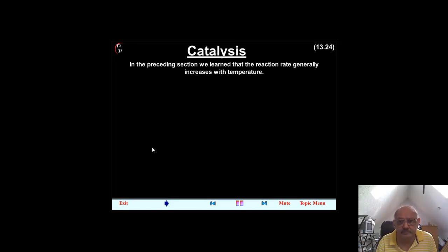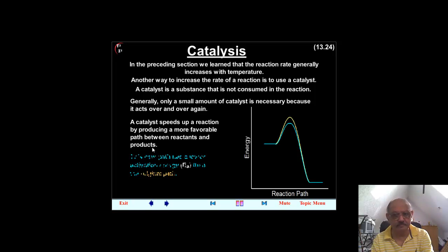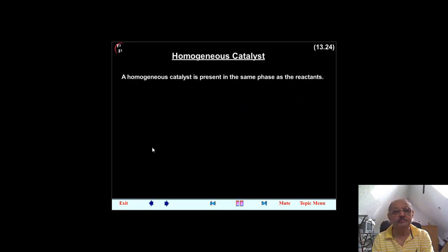We would like to show you a video on catalysis just to prove it to you that we have included videos right here. In the preceding section, we learned that the reaction rate generally increases with temperature. A catalyst speeds up a reaction by producing a more favorable path between reactants and products. This new path has a lower activation energy, E sub A, than the original path.